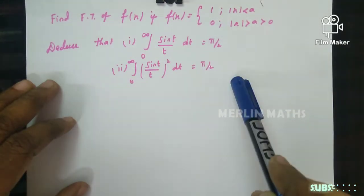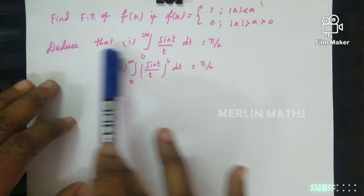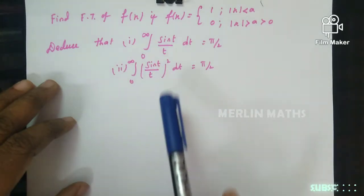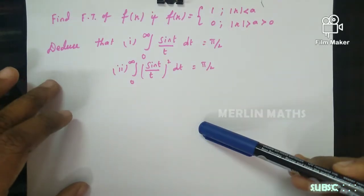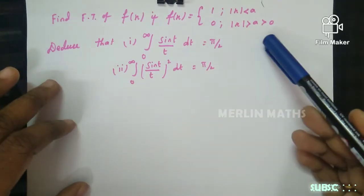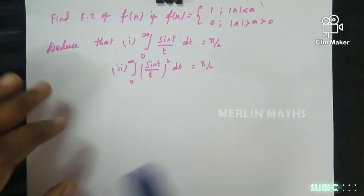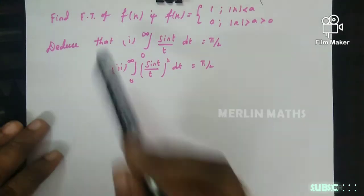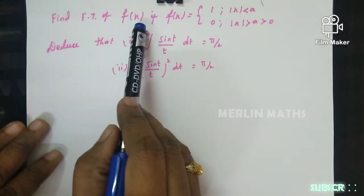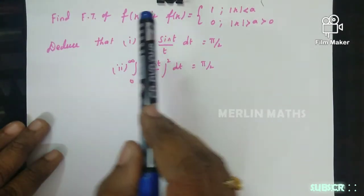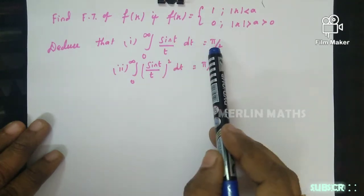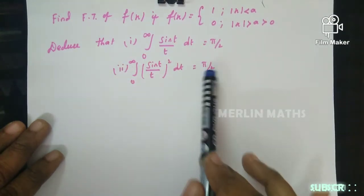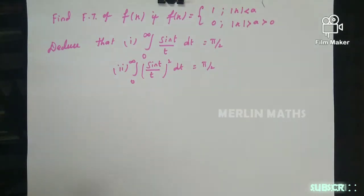Questions of this type — where we deduce results 1, 2, 3 — require us to use inversion, Parseval's, and convolution. First we find the Fourier transform of f(x), then use the inversion formula to get the first result, and then use Parseval's identity to get the second result.